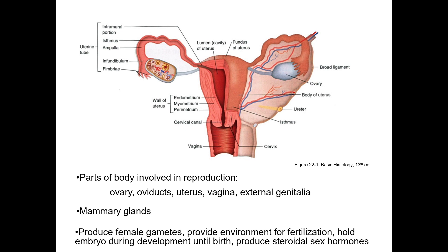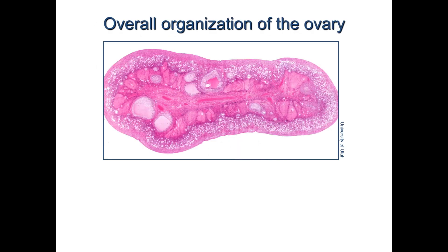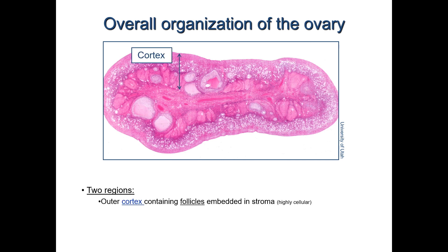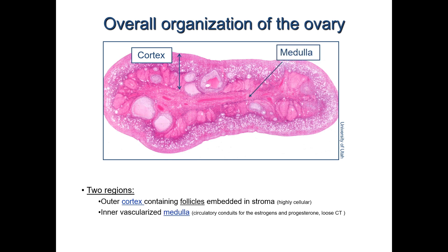This video will discuss the ovaries. The paired ovaries are the primary female reproductive organ, functioning to produce female gametes or oocytes or ova, and also produce the female sex hormones estrogen and progesterone. They are located in the pelvic cavity on either side of the uterus, held in place by the broad ligament. An H&E stained section of an ovary shows two regions: an outer cortex containing thousands of follicles embedded in connective tissue stroma, and an inner medulla consisting of loose connective tissue, blood, lymphatic vessels, and nerves.